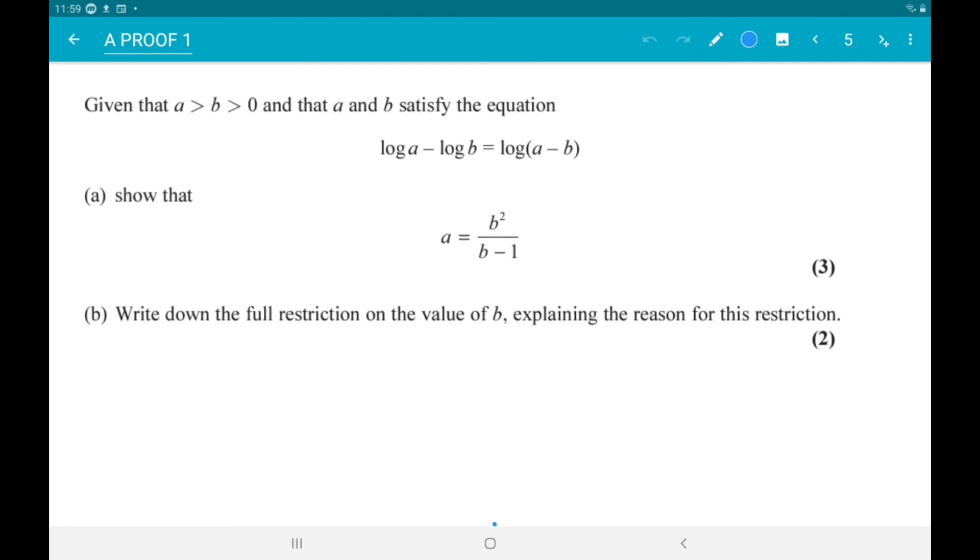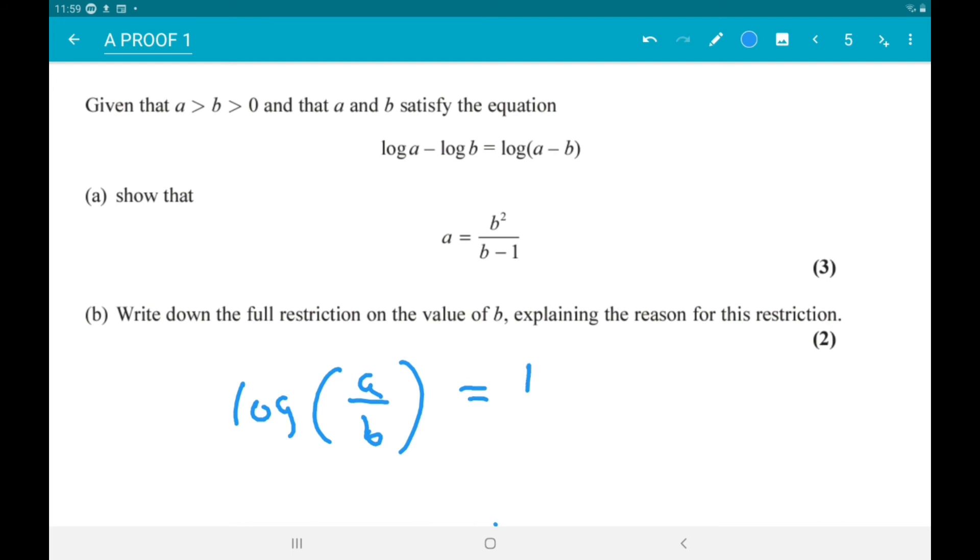Next up, given that a is greater than b is greater than 0, and that a and b satisfy log a minus log b is equal to log of a minus b, show that a is b squared over b minus 1. Alright. So, on the left, by the rules of logs, the left is log a over b. And then, on the right is equal to log of a minus b.